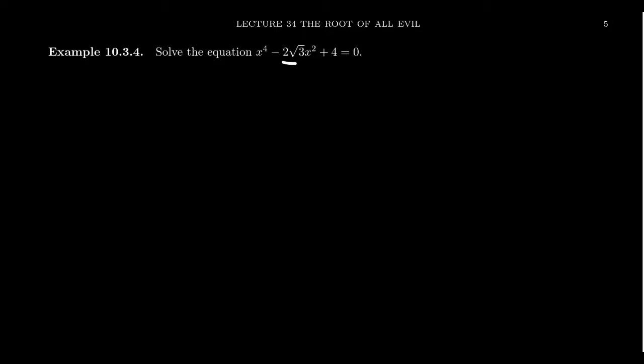Now, you might think at first this 2 root 3 — like, what the heck's going on with that coefficient? That's actually going to be a blessing for us. You'll also notice that this equation is missing some terms. We have an x to the 4th, we have an x squared, and we have a constant. There's no x cubed, there's no x term. And so this actually forms what we call a bi-quadratic equation.